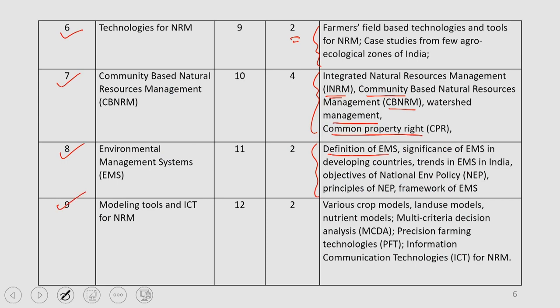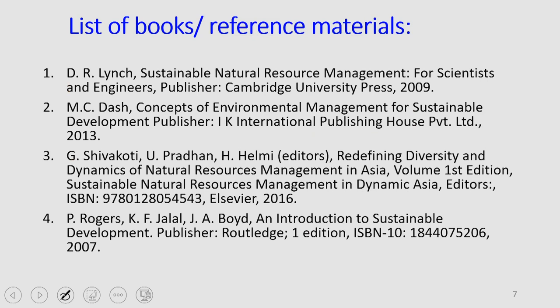Then we will move on to modeling aspects and how information and communication technology can facilitate natural resource management. We will discuss various models — crop models, land use models, multi-criteria decision analysis known as MCDA, precision farming technologies, and information and communication technologies for natural resource management. That is the entire structure of this MOOC course on NRM.